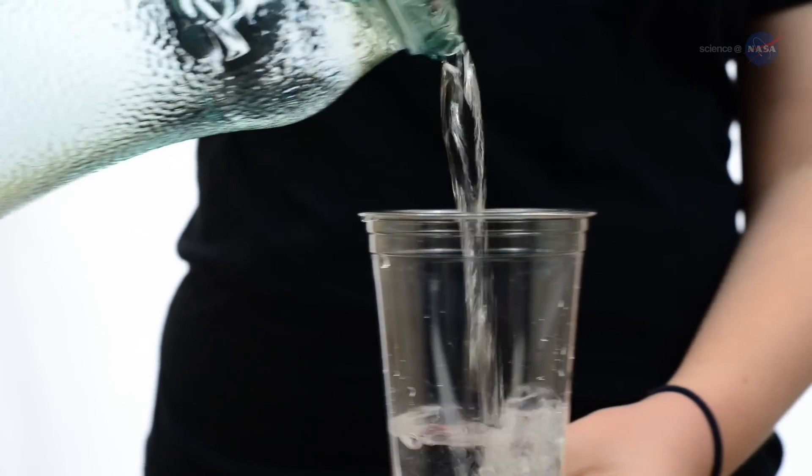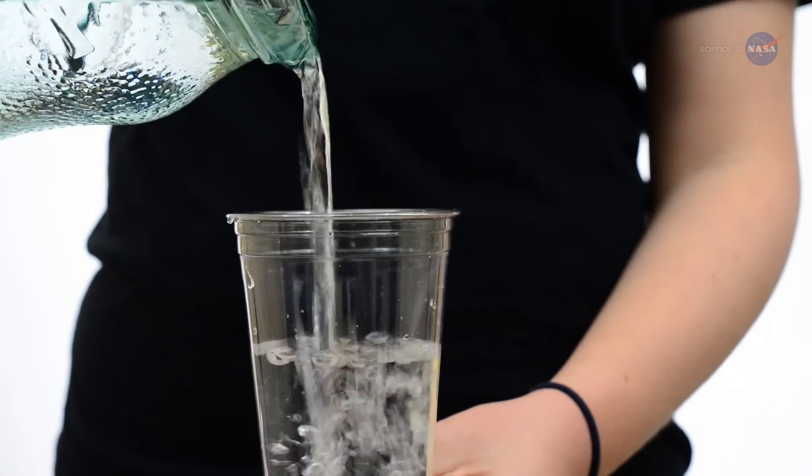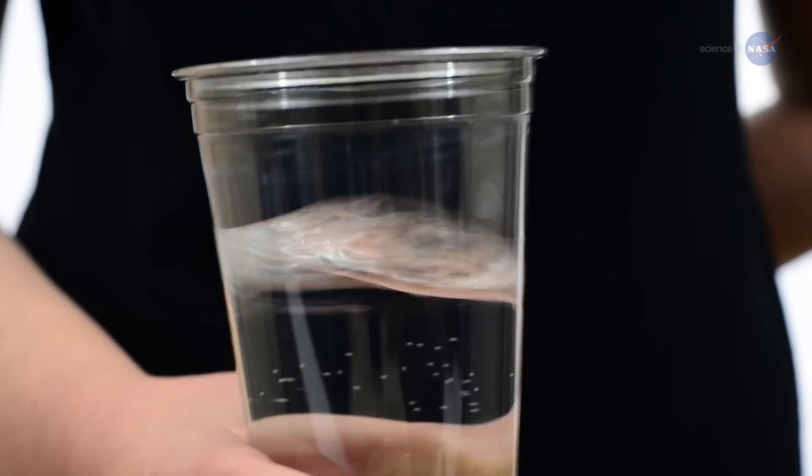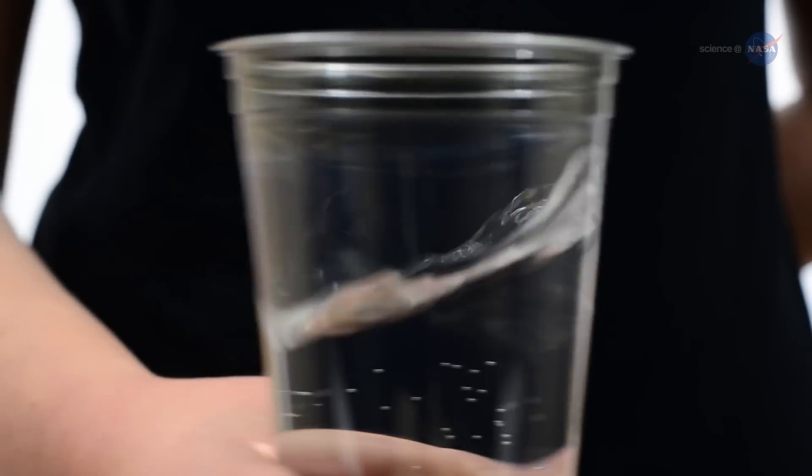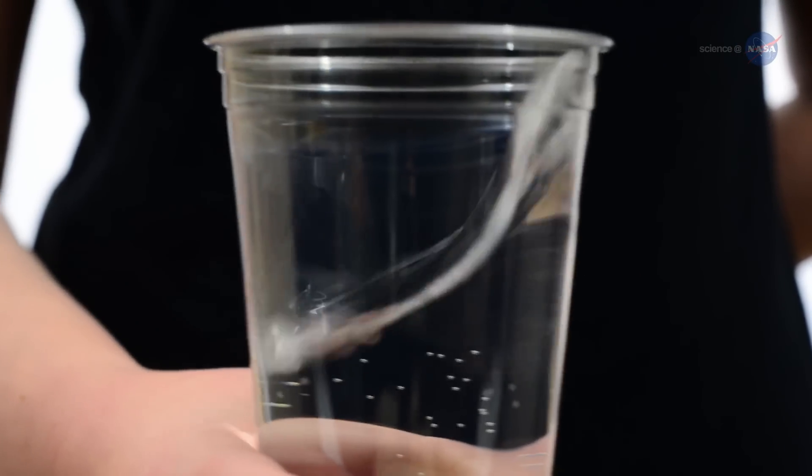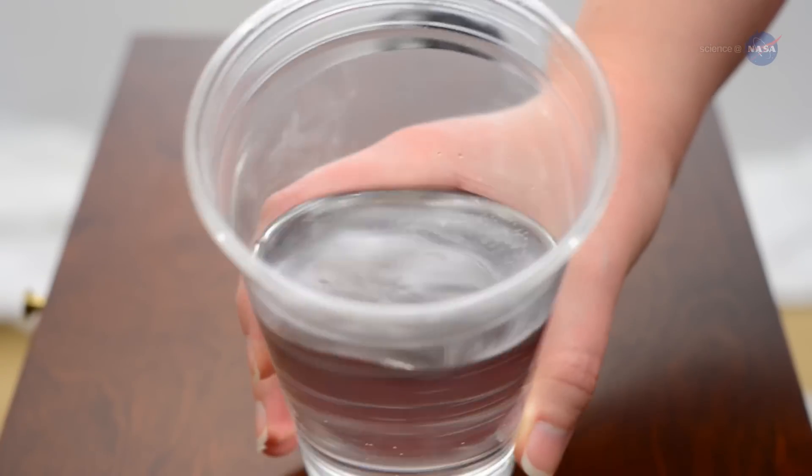The next time you pour yourself a glass of water, pause before you drink it. First, swirl the clear liquid around the glass. Gently slosh it back and forth. Tap the glass on the tabletop and watch the patterns that form on the surface.